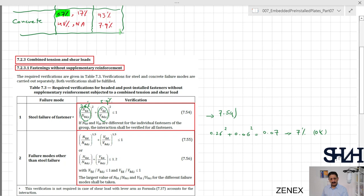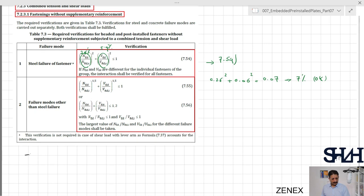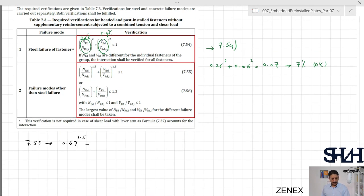For this verification you can just take the maximum or the largest value of the utilization ratios that we already have. For the concrete, the maximum utilization ratio is 67 percent in tension and 43 percent for the shear. If we go with 7.55, then it will be 67 percent power by 1.5 plus 43 percent power by 1.5 which is 83 percent, so utilization ratio will be 83 percent.